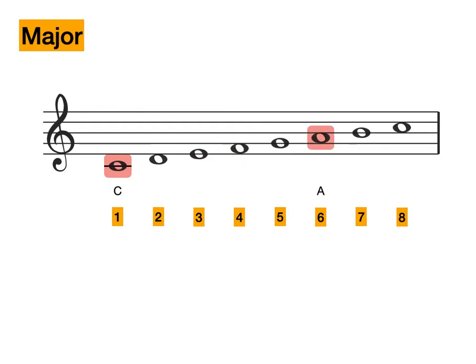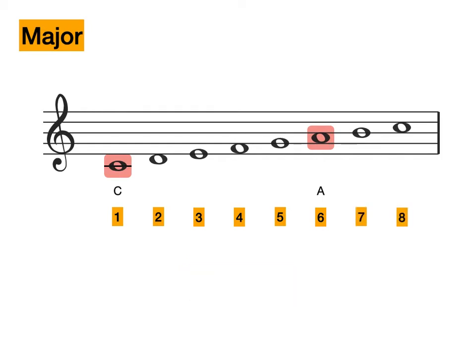Now we have highlighted A. A is the sixth note of C major, making this a major sixth. And lastly, we have highlighted the B. B is the seventh note of C major, making this a major seventh.